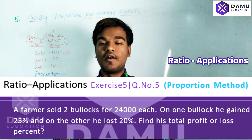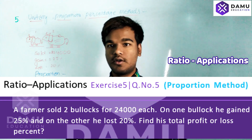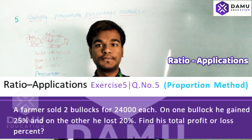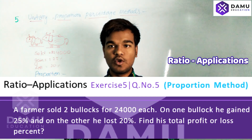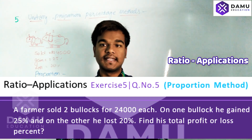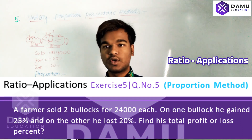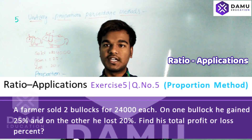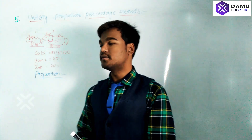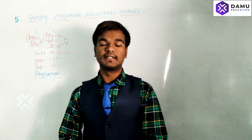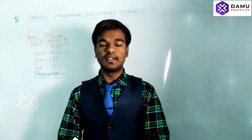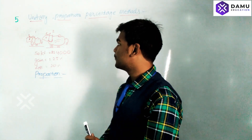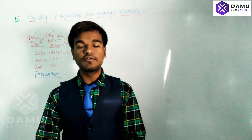Our fifth question: a farmer sold two blocks, each with a selling price of 24,000. After selling one block they got a gain percentage of 25% and a loss percentage of 20%. We previously solved this using the unitary method. Now we are going to solve this question using the proportion method, where on one side we write all the cost prices and on the other side all the selling prices.